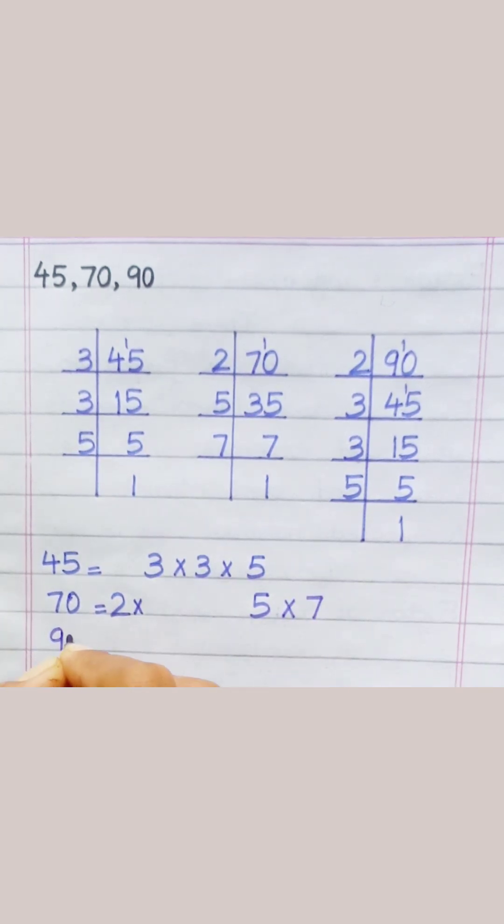Ninety equals two multiply three multiply three multiply five.